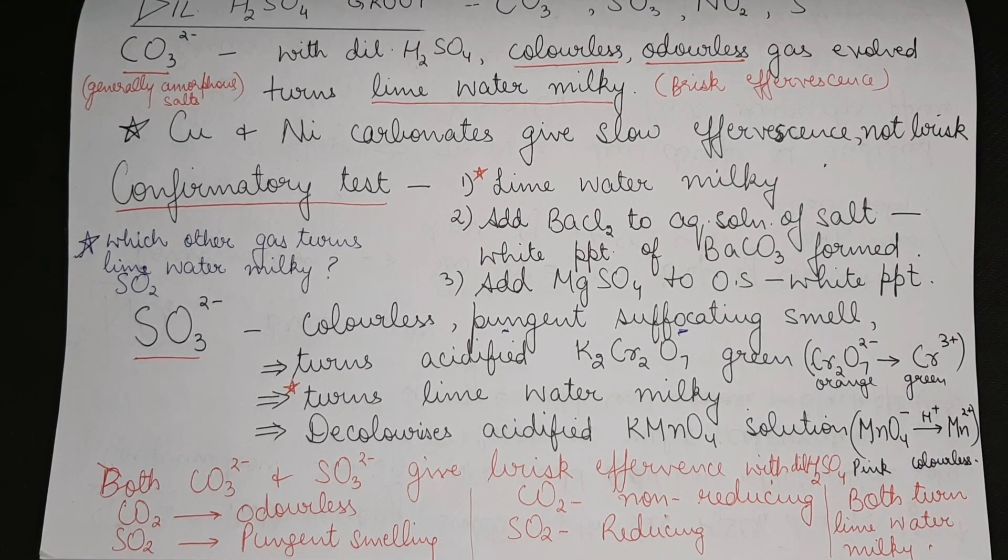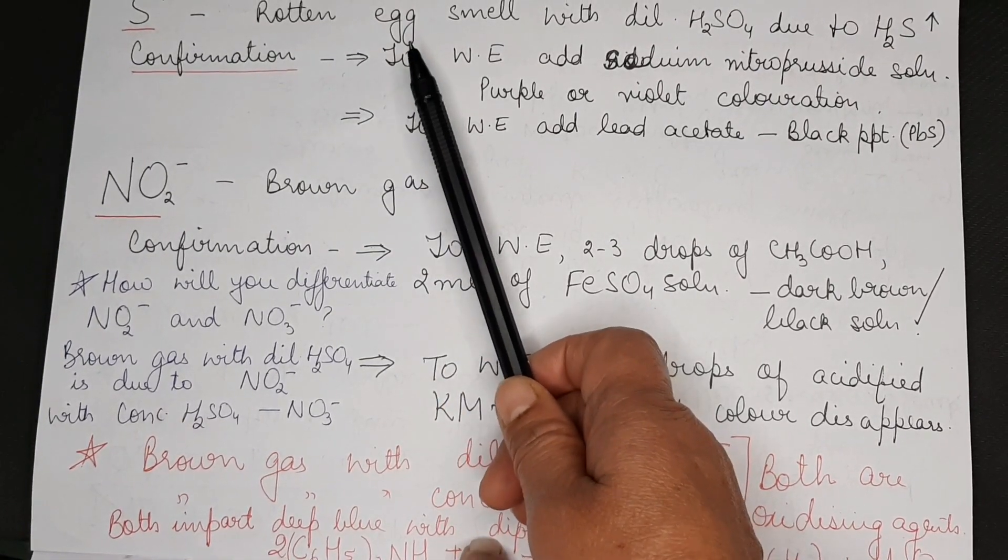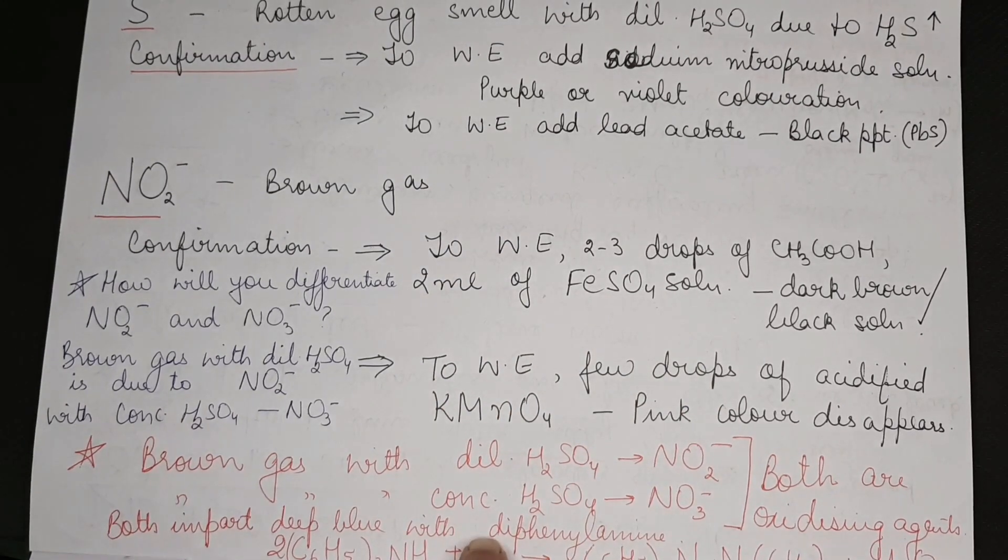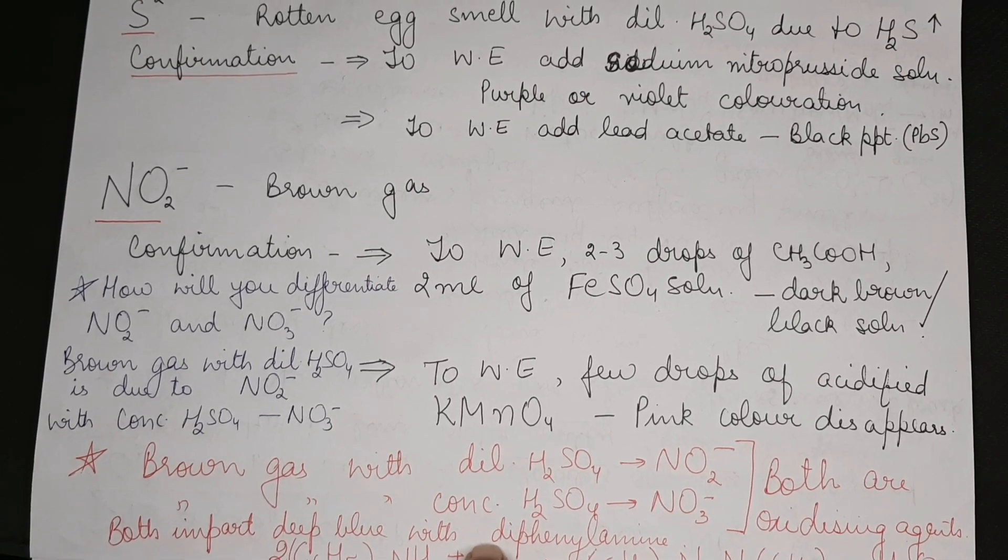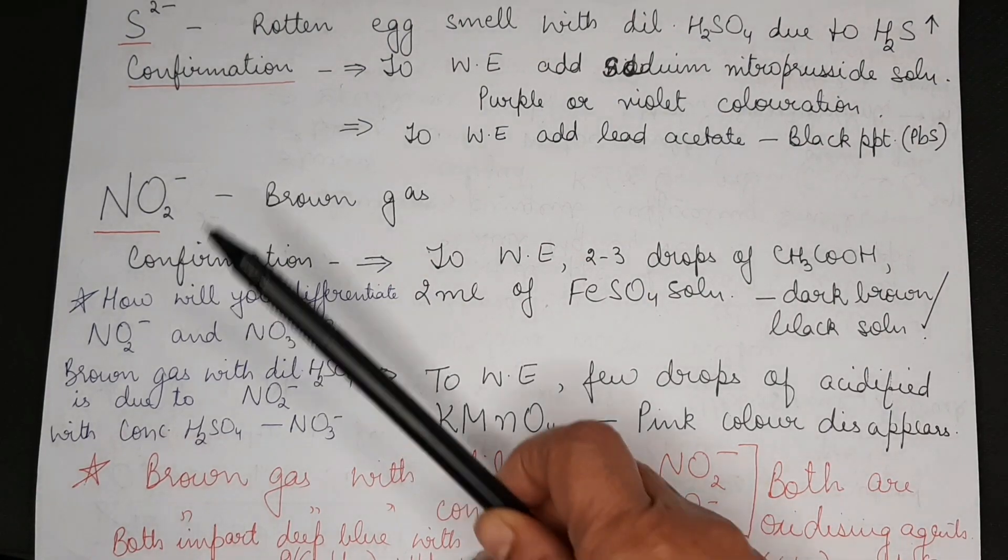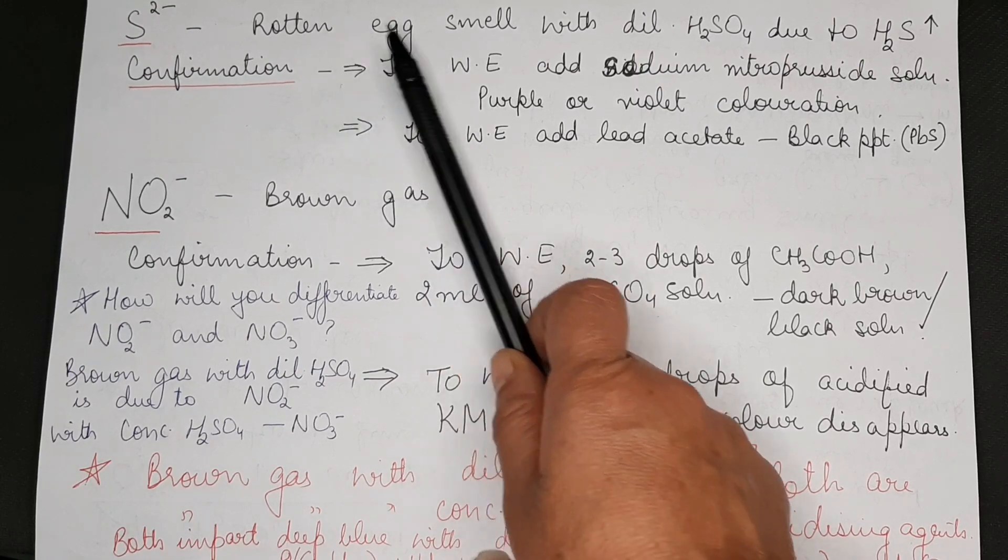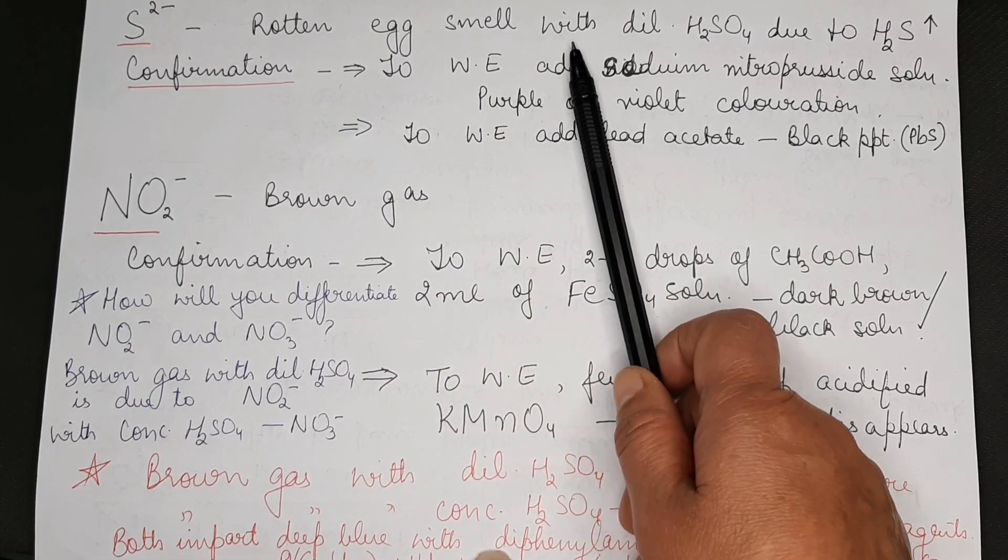Next is sulfide ion determination. Sulfide salts are the easiest to identify because they give a rotten egg smell. The salt also gives a rotten egg smell. The moment you take it out from its box it will give the smell indicating sulfide ion, rotten egg smell, a very strong smell.